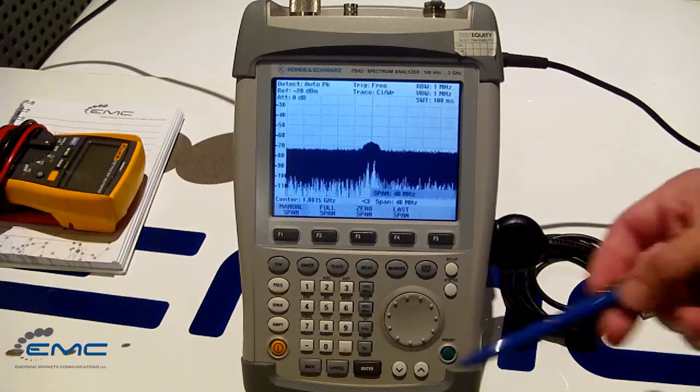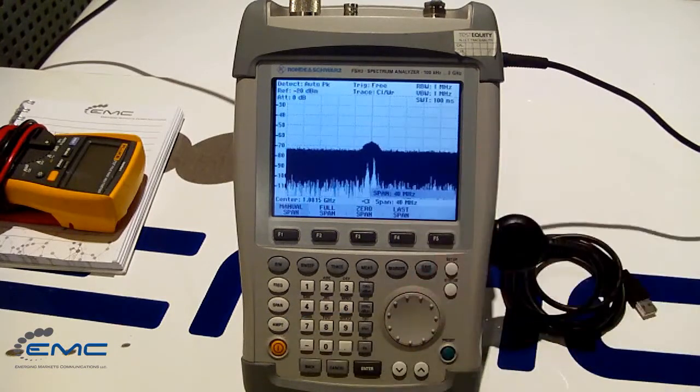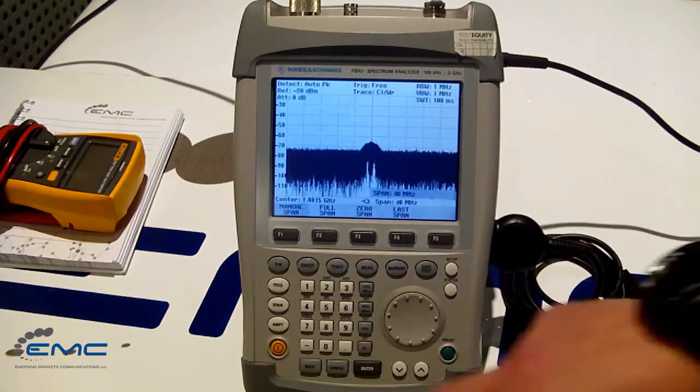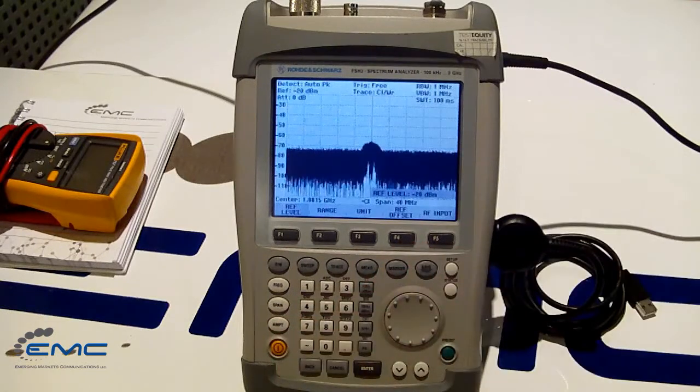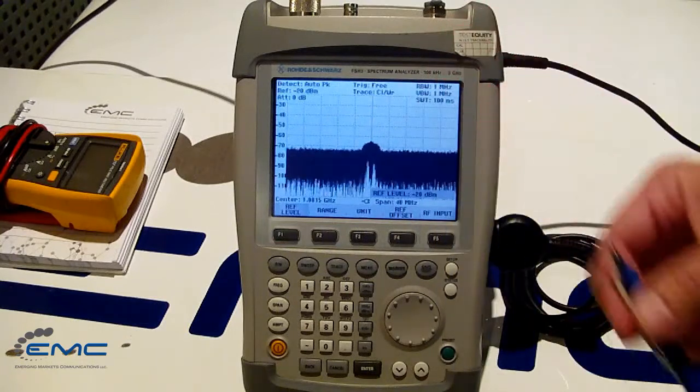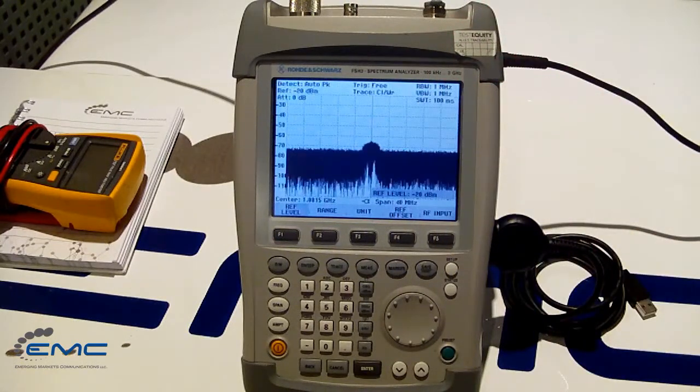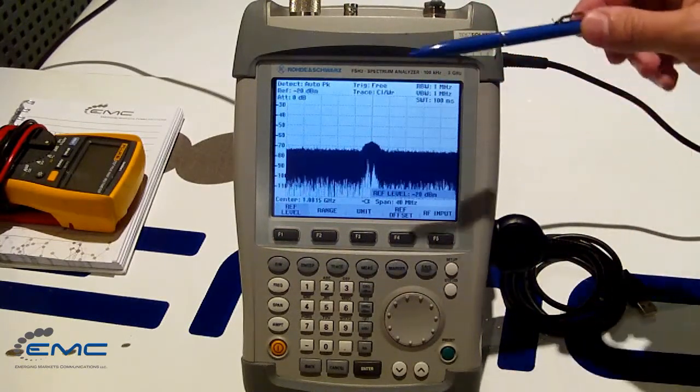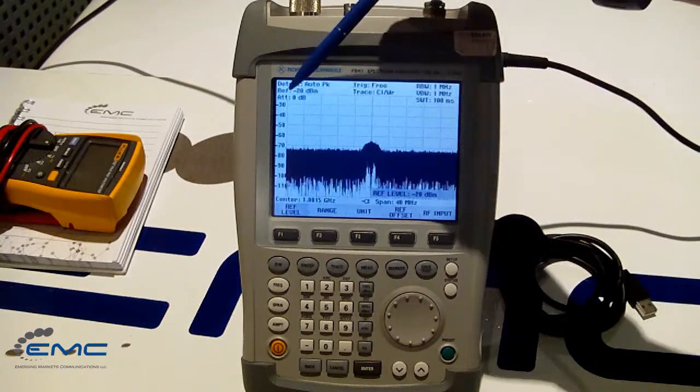Next is amplitude. From here, we should change our reference level and range level. So, reference level basically shows you what is the power level represented by the top of the screen from here.